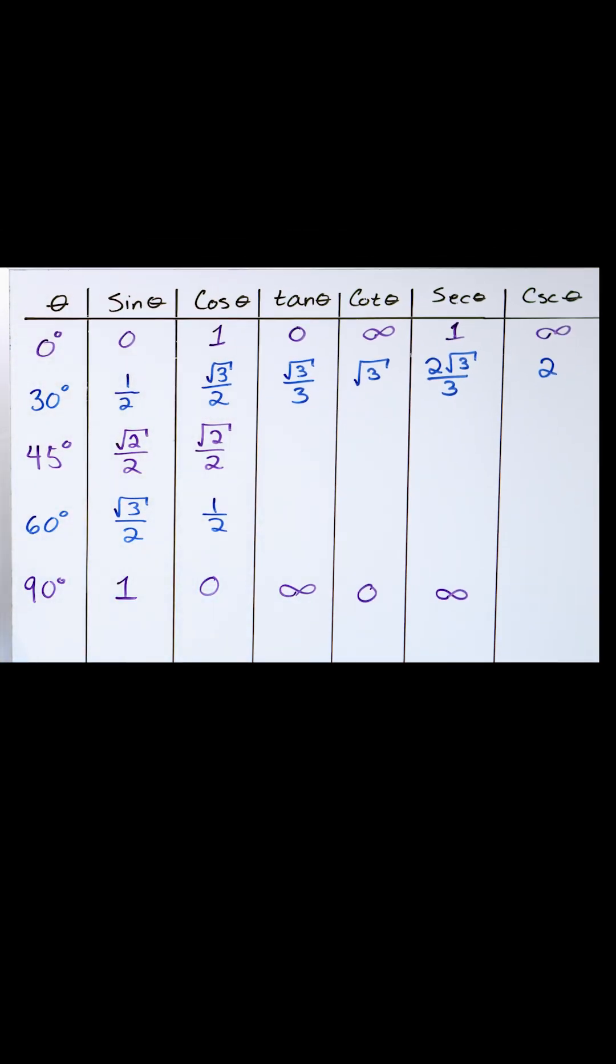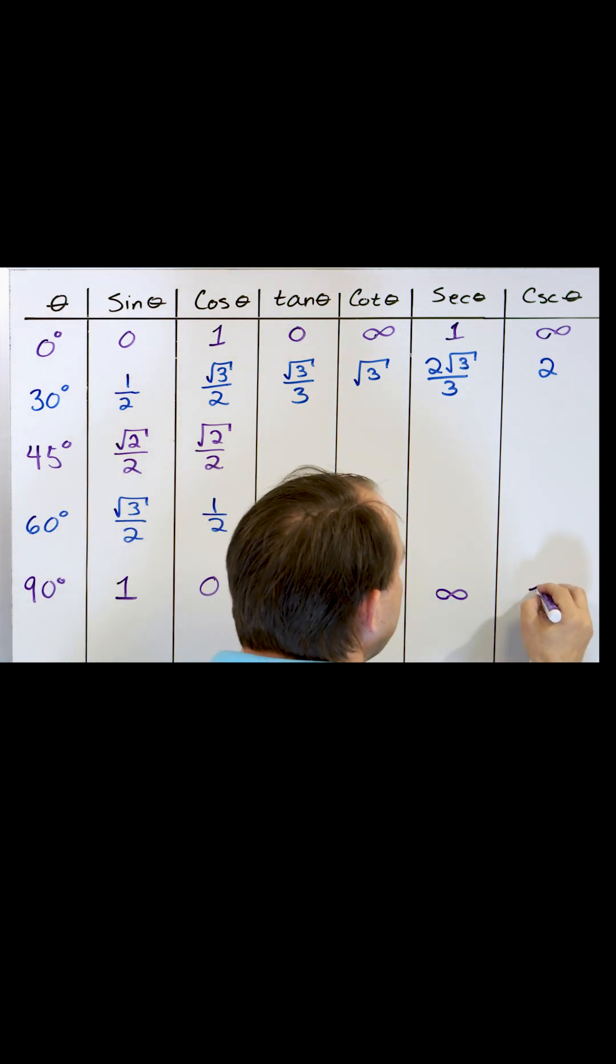And what is the cosecant? The cosecant is one over the sine, but the sine was one. So one over the sine is one over one, which is one.